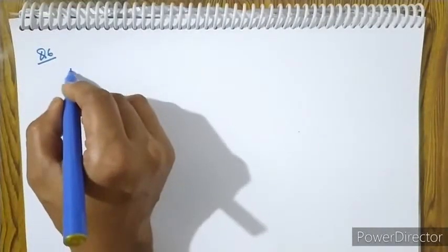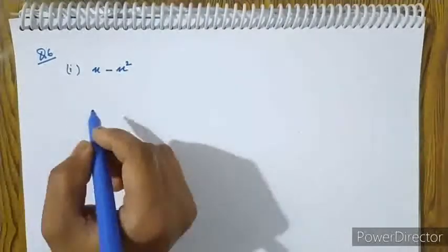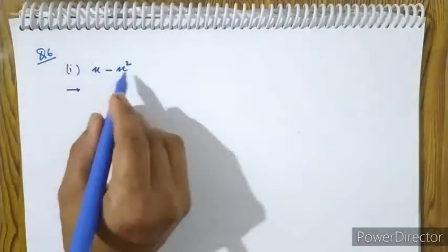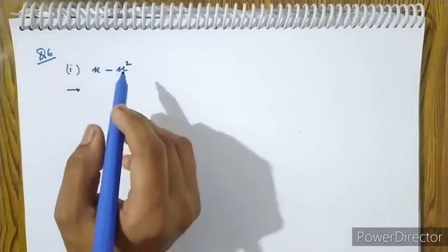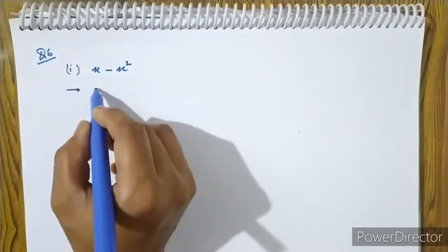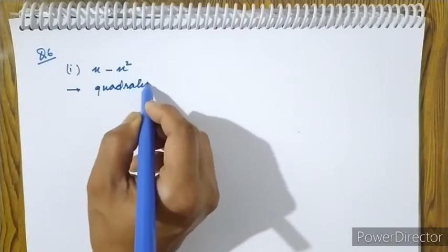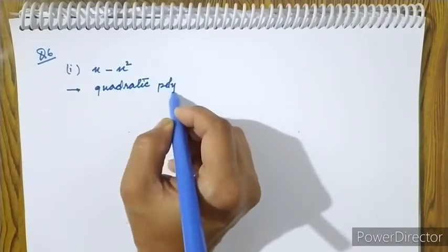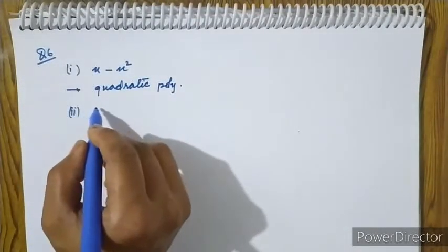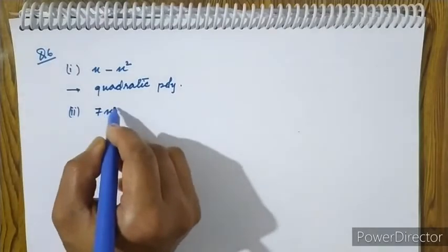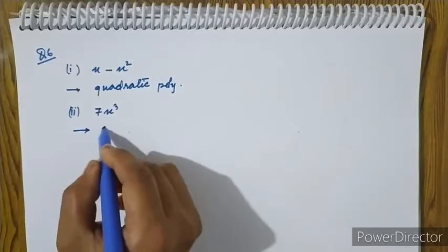Number one: x minus x squared. Number two has degree 3, so this is the cubic polynomial.